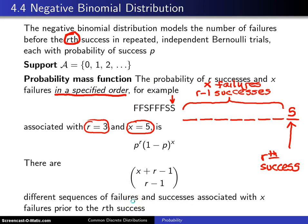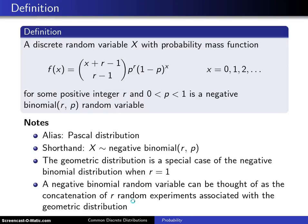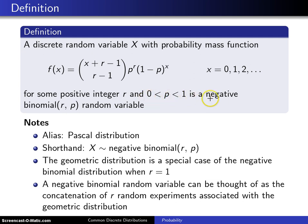That derivation leads to the formal definition: a discrete random variable x has probability mass function f(x) = (x + r − 1 choose r − 1) · p^r · (1 − p)^x, for x = 0, 1, 2, …, for some positive integer r and some probability of success p between zero and one. That is a negative binomial random variable with parameters r and p.